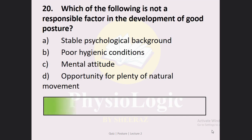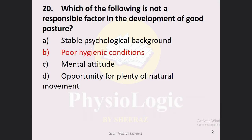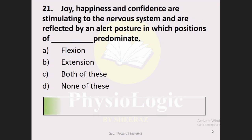Next MCQ: Which of the following is NOT a responsible factor in the development of good posture? Option A: stable psychological background. Option B: poor hygienic conditions. Option C: mental attitude. Option D: opportunity for plenty of natural movement. The correct option is Option B — poor hygienic condition is not a responsible factor in the development of good posture; it can be a factor in the development of bad or poor posture.